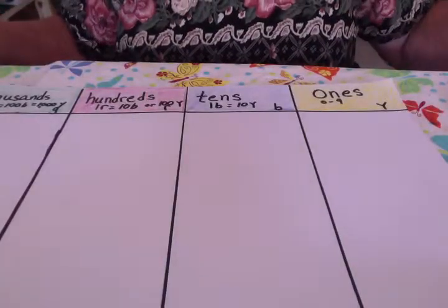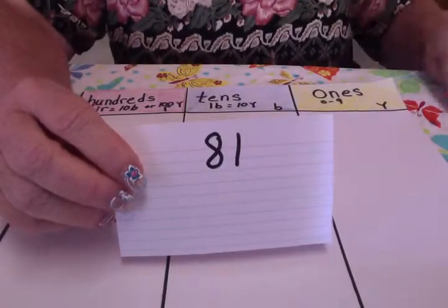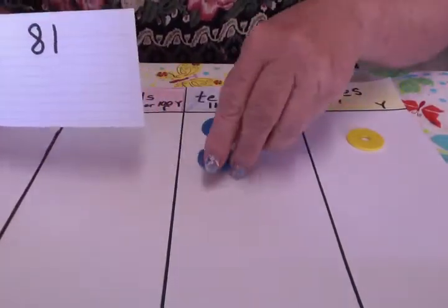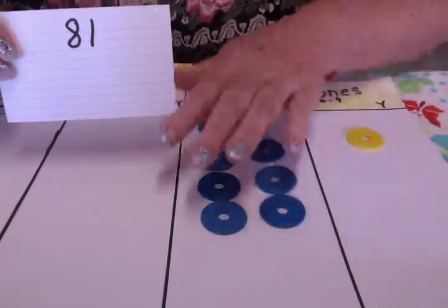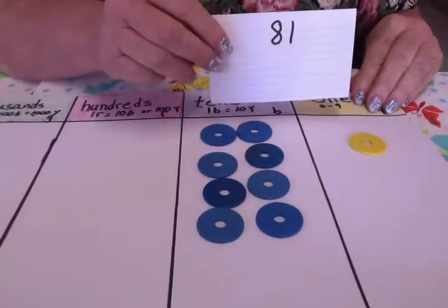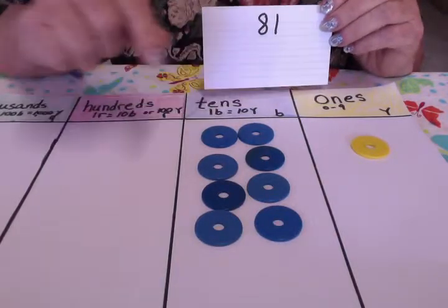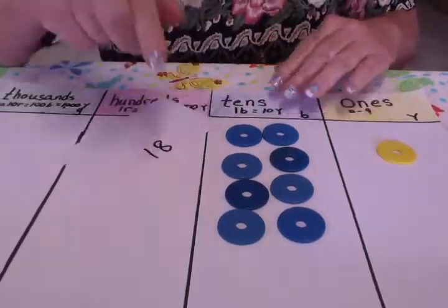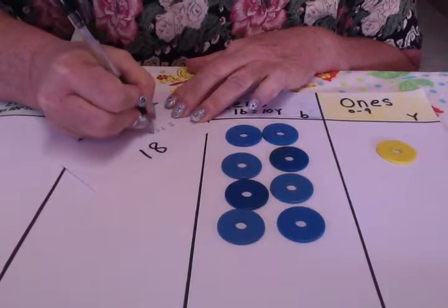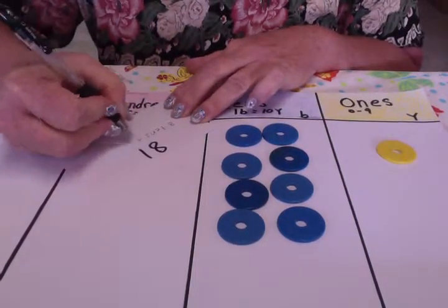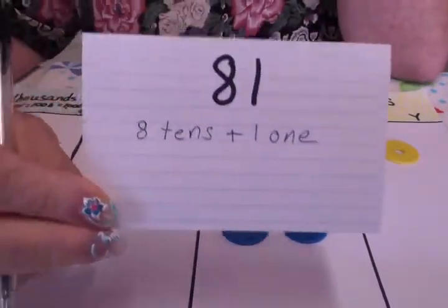After we did just the ones column, we went up and incorporated the tens. We started with the number 81, so I'm going to put 81 on the board. When we write this out, we need to make sure that we're representing both place values. So we would write out that we have 8 tens plus 1 one — and that's how we would write it out with the numbers.